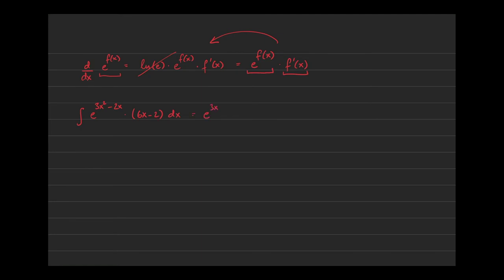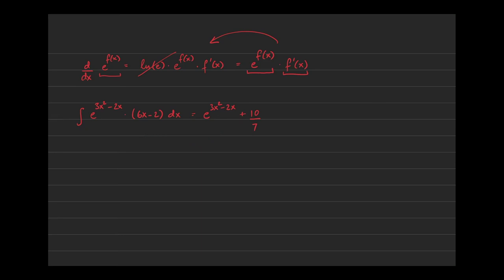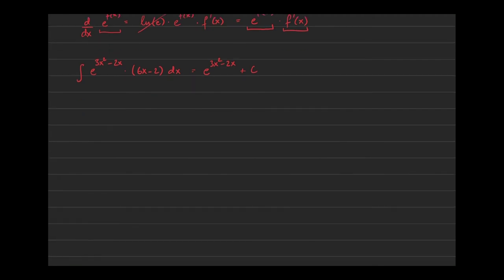The answer is just e to the (3x² minus 2x) plus C. The plus C is there because if the constant had been plus 1, plus 10, or plus 10/7, the derivative would still be the same expression on the left-hand side. Since we can never recover what that constant was, we say it was some constant — historically called plus C, the constant of integration — which we cannot recover unless we have additional information called an initial value.